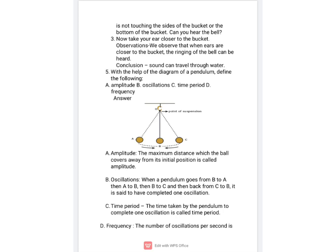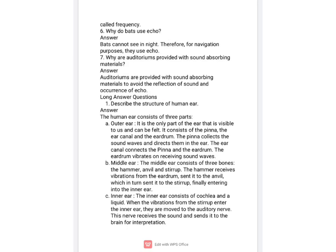An oscillation is when a pendulum goes from its mean position B to the extreme position A, then comes back to the mean position, moves to the extreme position on the other side, and returns to the mean position — completing one full round. The time taken to complete one oscillation is called the time period, whereas frequency is the number of oscillations covered by the pendulum in one second.